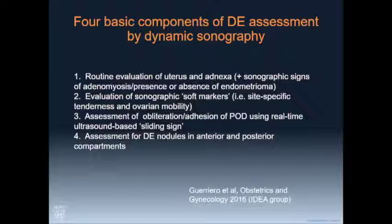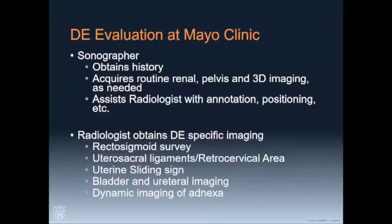A group last year, including Banasarif and others, put together four components of the examination. Since people involved taught me how to do this, this is the same way I do it. Most importantly, we want to look for obliteration of the cul-de-sac. We're going to look very specifically in certain locations in the anterior and posterior compartments, and I would add in the vaginal compartment for deep endometriosis lesions. In the United States we have sonographers, not just radiologists — internationally these are typically done by radiologists and surgeons. We use sonographers to do the basic imaging and take pictures of the kidneys, then the radiologist goes in and does a fairly short survey of the rest of the exam.